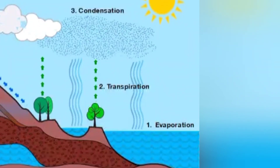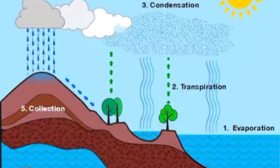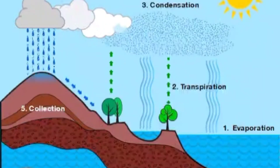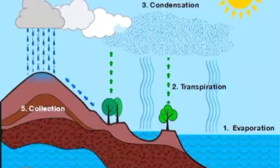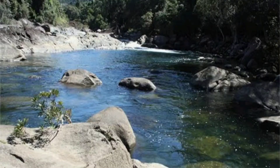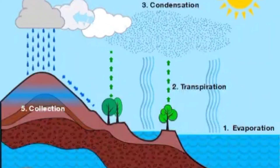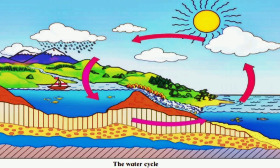These small droplets join together and form bigger drops which are heavy and cannot float. Such drops of water fall down on the earth in the form of rain. The rainwater flows into rills, streams, rivers, and finally into the sea. This process of evaporation, condensation, and rainfall goes on in a continuous cycle — this is known as the water cycle in nature.